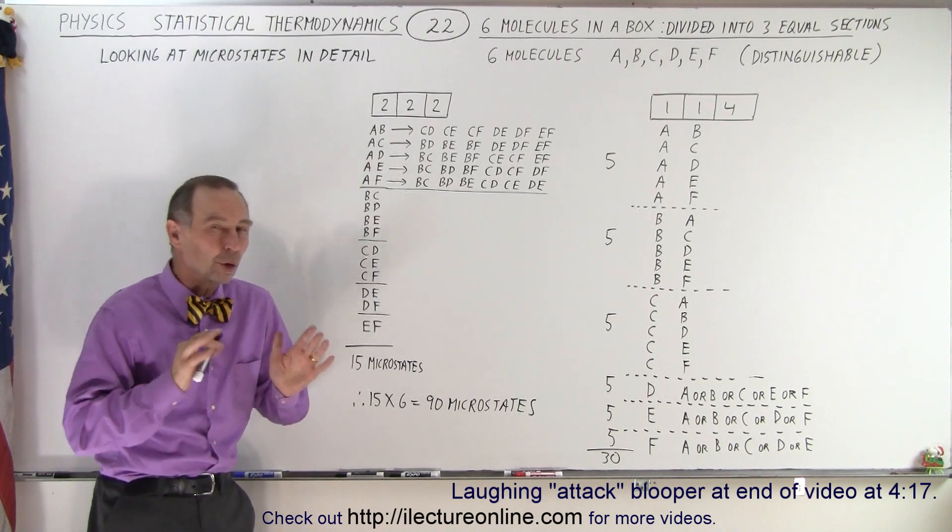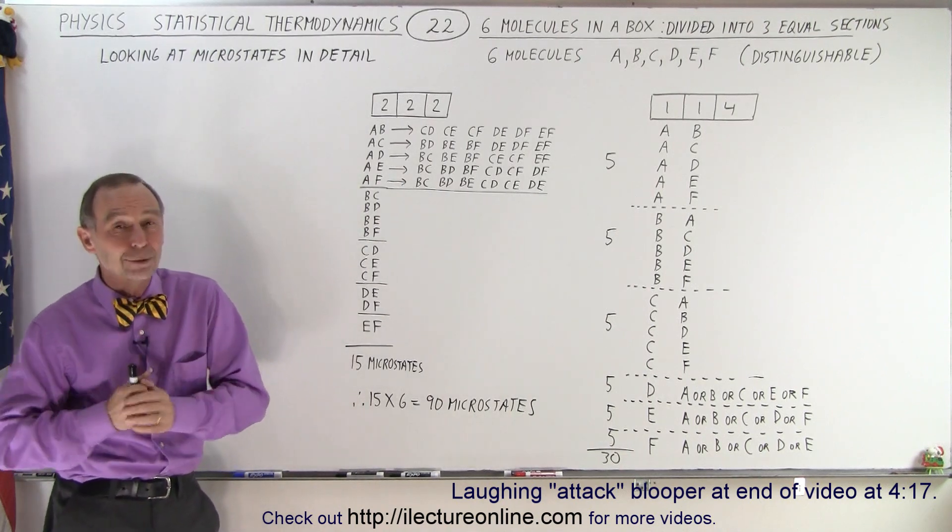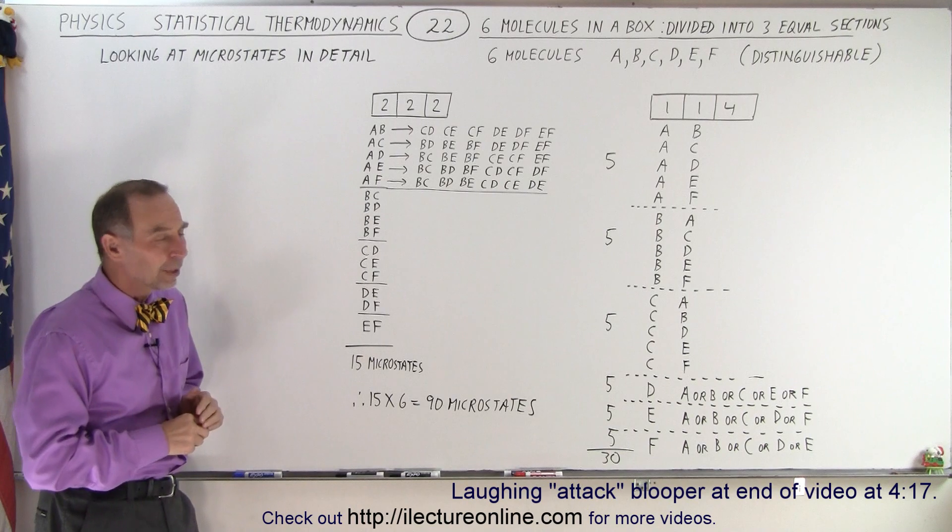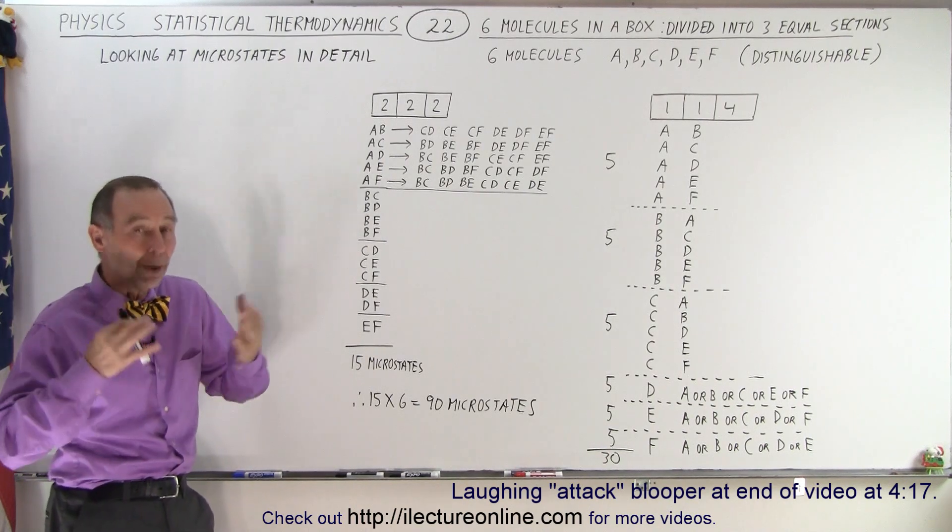We saw in the previous video there are a total of 729 total microstates. But how can we find another way to come up with that number?